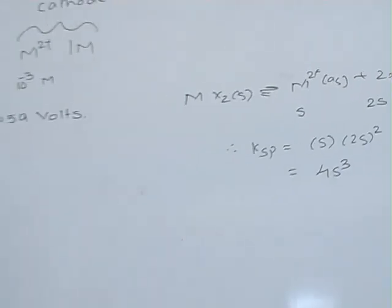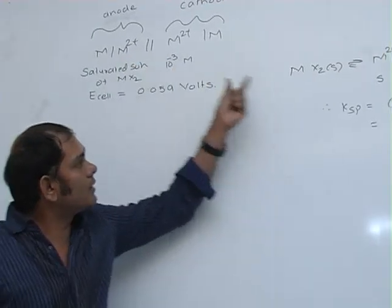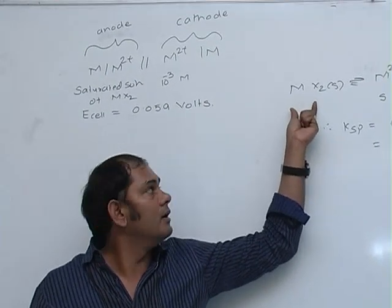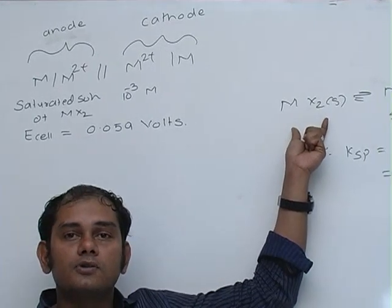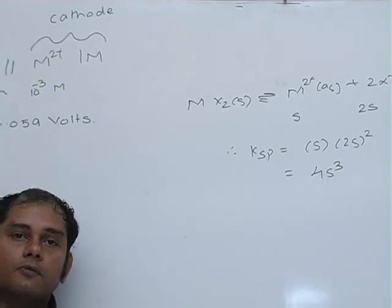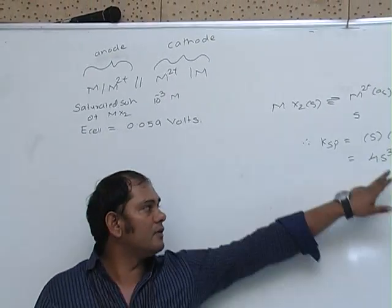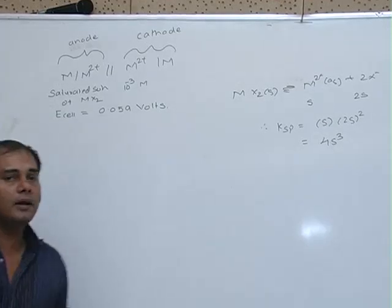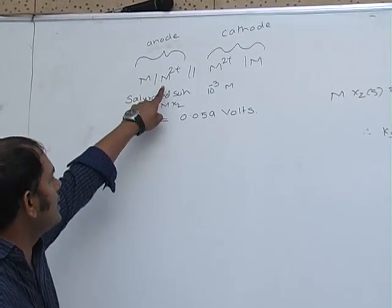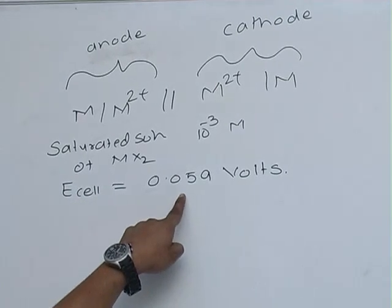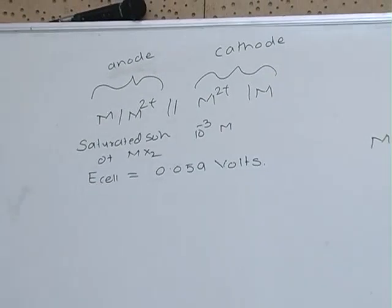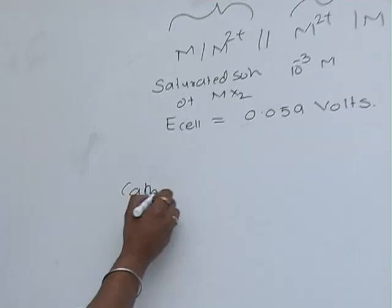So we need to find the solubility product of this insoluble salt, which will be 4S³. To solve this problem, we need to find the value of S. We're given that this concentration cell has E_cell of 0.059 volts. The reaction at the cathode will be reduction.